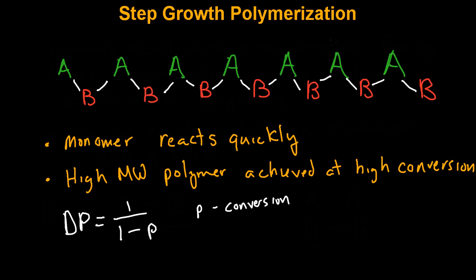For example, when p is equal to 0.99, so 99%, the DP is only equivalent to 100.